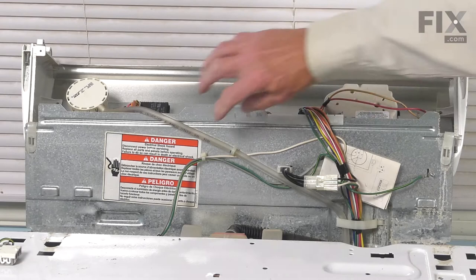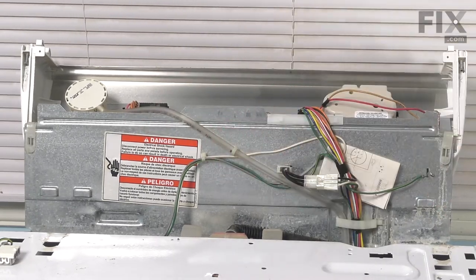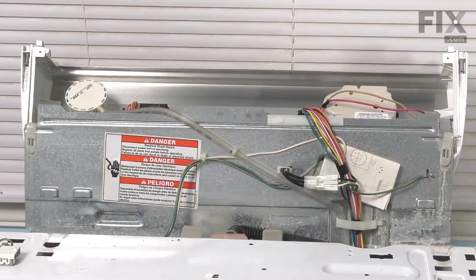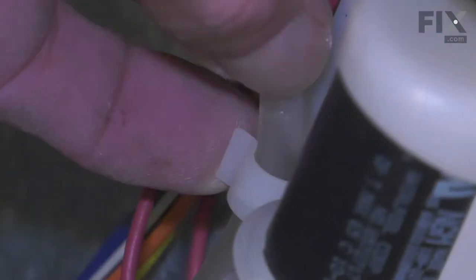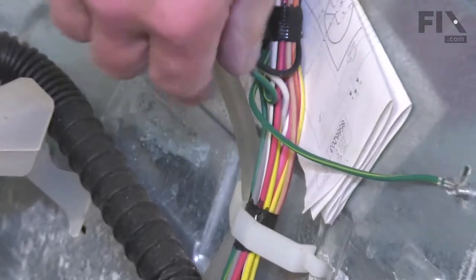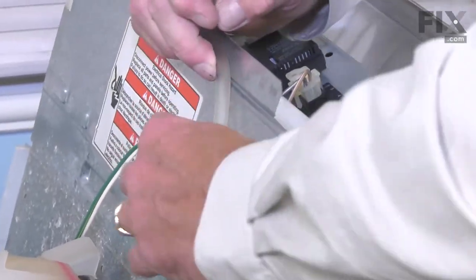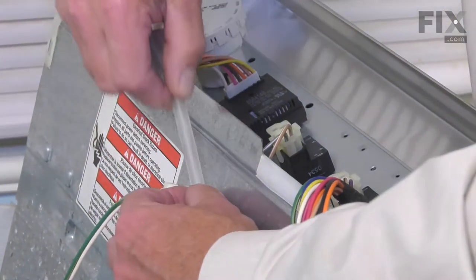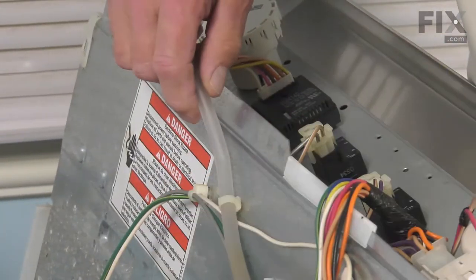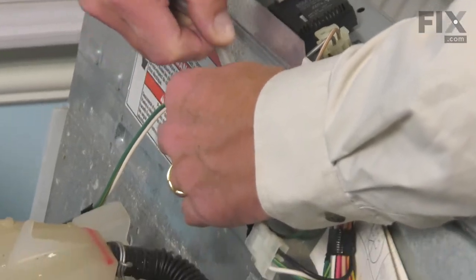Our next step will be to disconnect the air dome tube to that water level control where it attaches to the side of the tub. Simply reach in from the side and you can access that. Just pull it off the dome on the side of that tub, pull it up through the retainer. We'll just pull it out of there. Feeds up through this bracket, through another clip on the back panel.